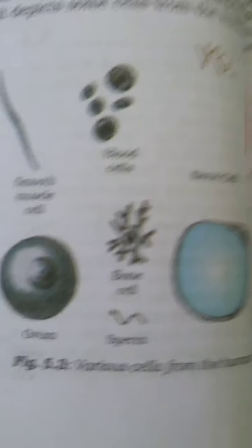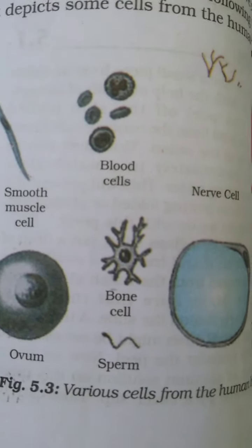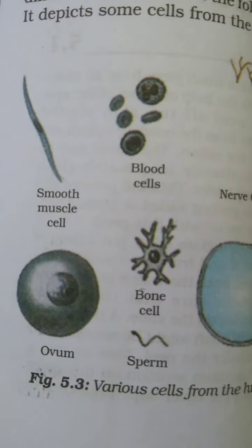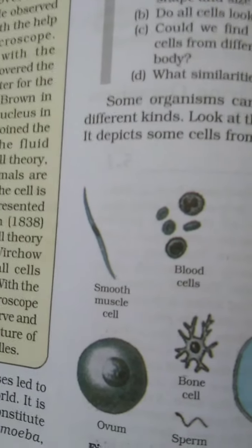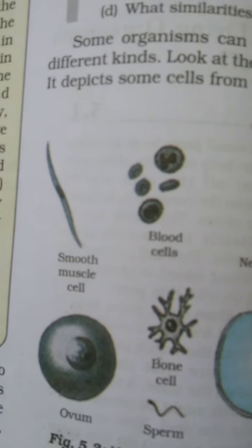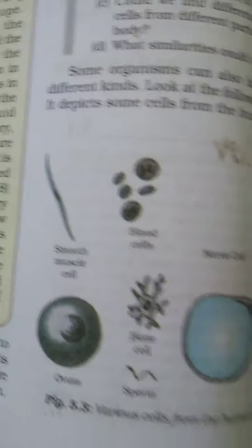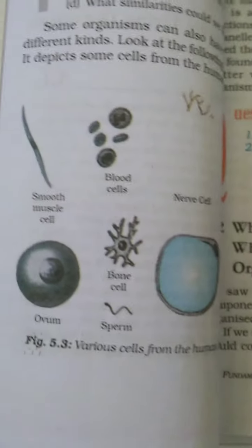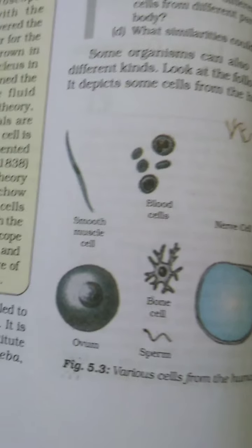When the shape and size of a cell are related to the specific function it performs — for example, amoeba is made up of only one cell but its shape is not fixed; it keeps changing. So in some cases the shape of the cell is not the same; it could be more or less fixed for a particular type of cell. Nerve cells have a typical shape, and each cell has the capacity to perform certain basic functions.